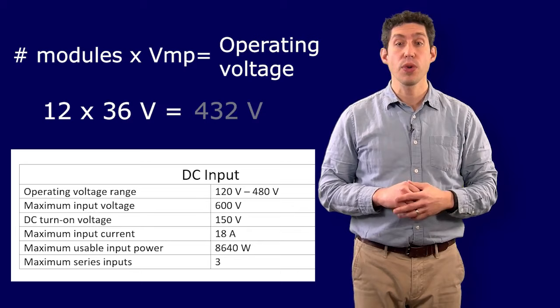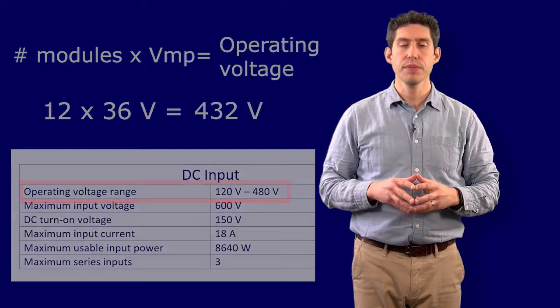12 modules times the 36 volt maximum power voltage is 432 volts, which is within the operating range of the inverter as well.